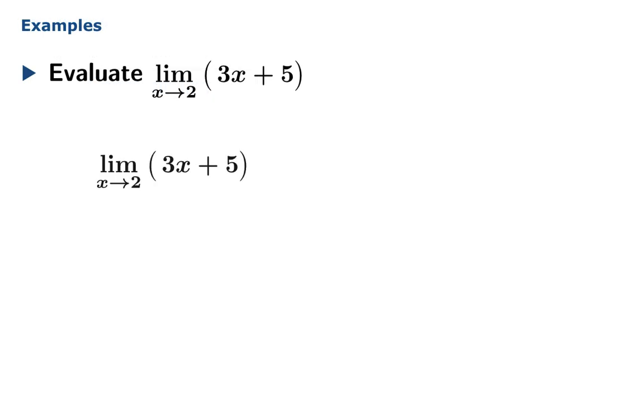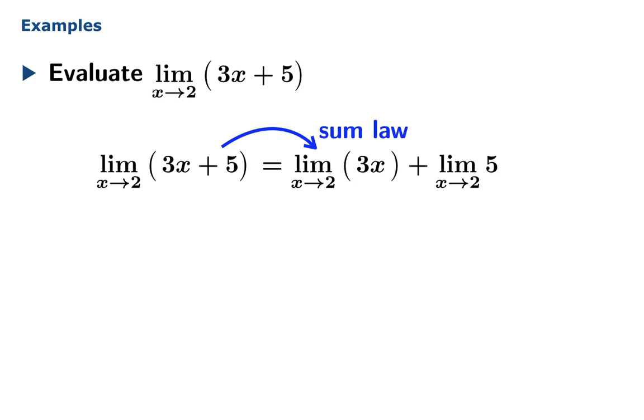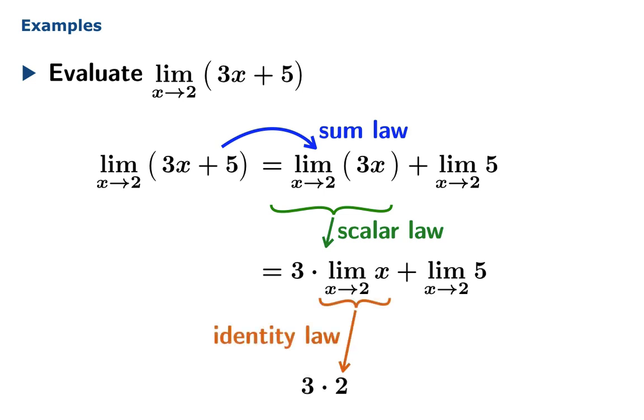Let's evaluate the limit as x approaches 2 of 3x plus 5. The first thing we'll do is break this apart using the sum law. The factor of 3 can come out using the scalar law. The identity law tells us this limit is just 2. And the constant law tells us this limit is obviously 5. Putting all the pieces together, we find that the limiting value of 3x plus 5 as x approaches 2 is 11.